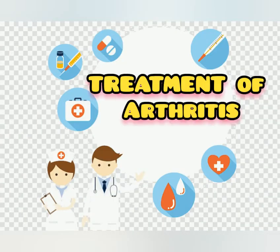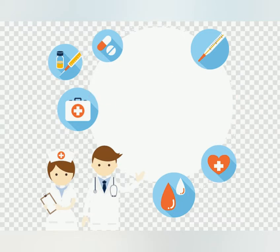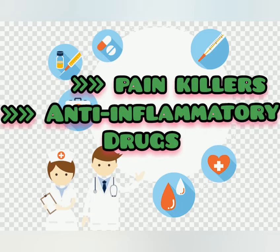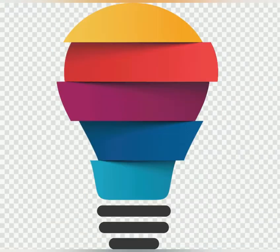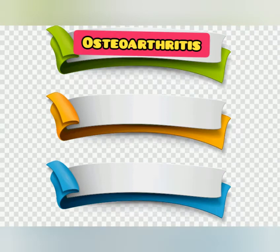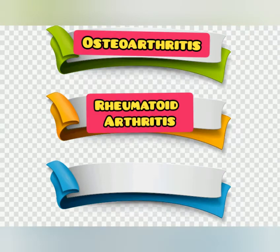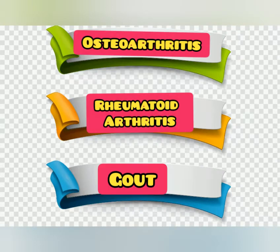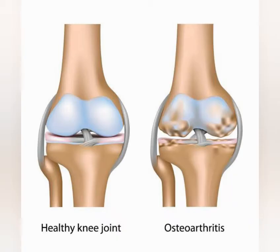The treatment of arthritis includes painkillers and anti-inflammatory drugs. There are many types of arthritis; we will discuss a few examples here: osteoarthritis, rheumatoid arthritis, and gout.